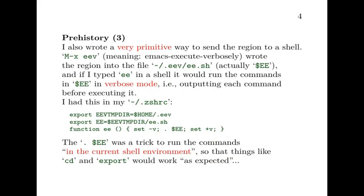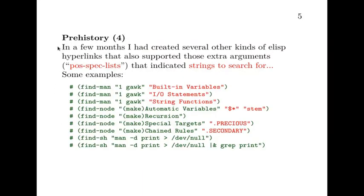I also wrote a very primitive way to send the current region to a shell. When I typed meta-x ev, which means Emacs execute verbosely, this command wrote the region into a temporary file, and if I went to a shell and typed ee, it would run the commands in that temporary file. In a few months I had created several other kinds of elisp hyperlinks, all of them supporting extra arguments that indicated usually strings to search for, but sometimes also a line number.